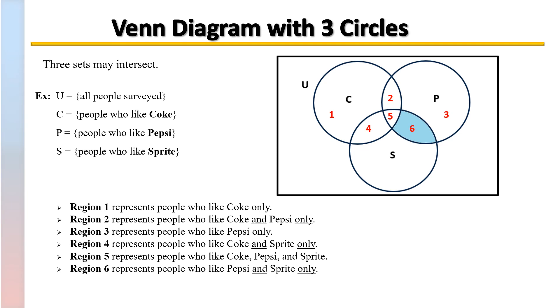Region 6 represents those people who like Pepsi and Sprite only. In other words, they do not like Coke, but they do like Pepsi and Sprite.